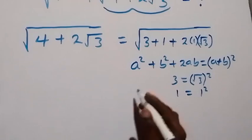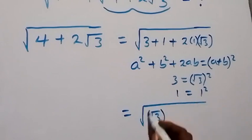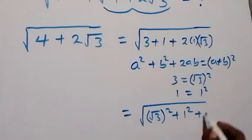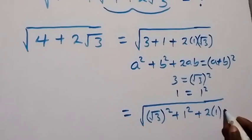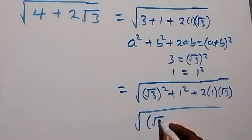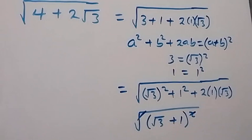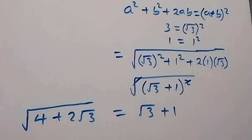This gives us square root of (√3)² + 1² + 2 times 1 times √3. From this pattern, we can shorten this as square root of (√3 + 1)², and the square cancels the square root, so √(4 + 2√3) is simply equal to √3 + 1.